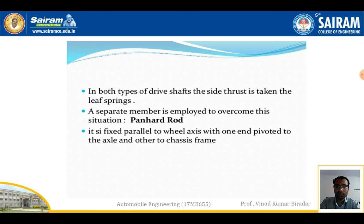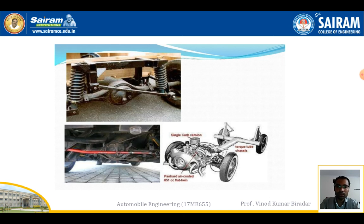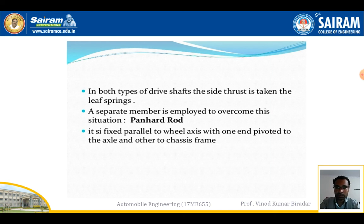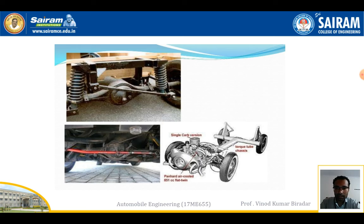In both types of drive, the side thrust is taken by the leaf spring only, but a separate member — the panhard rod — is employed for lateral location. The panhard rod is fixed parallel to the wheel axis, with one end pivoted to the axle and the other end to the chassis frame. In the diagram, the pink or blue color shows the drive shaft.